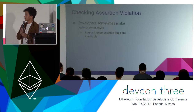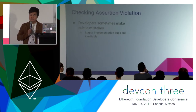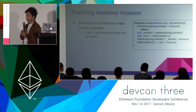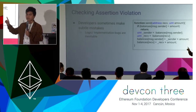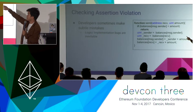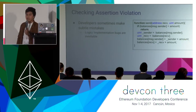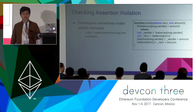For example, this is a simple function that transfers tokens from the sender to the receiver. Can any of you detect the major problem in this function?